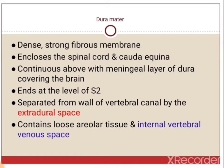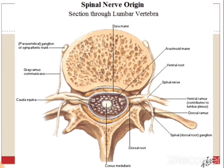The dura mater is a dense, strong fibrous membrane that encloses the spinal cord and cauda equina. It is continuous above with the meningeal layer of the dura covering the brain, and ends at the level of S2 vertebrae. It is separated from the wall of the vertebral canal by the extradural space, which is filled with the internal vertebral venous plexus and loose areolar tissue. The epidural space is this yellowish area filled with loose areolar tissue and internal vertebral venous plexus.